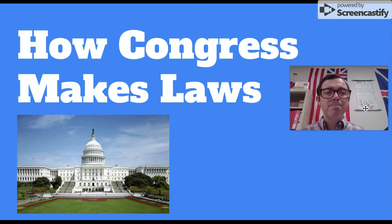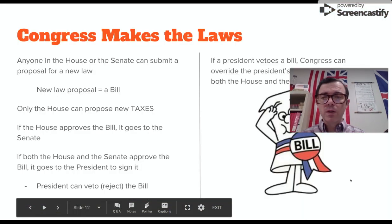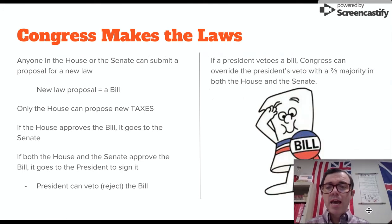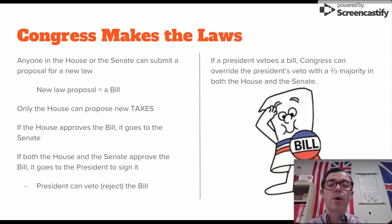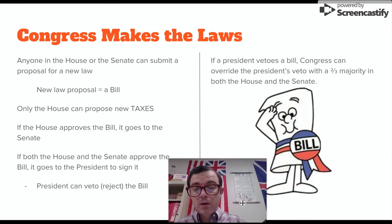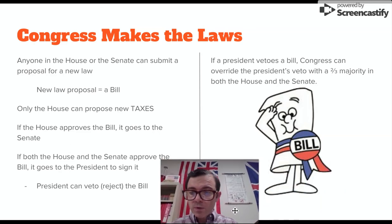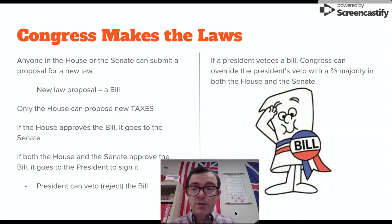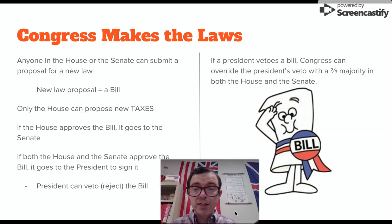How does Congress make laws? Anyone in the House or the Senate can submit a proposal for a new law. A new law proposal is called a bill. So if the House approves a bill, it goes to the Senate. If both the House and the Senate approve the bill, it goes to the President to be signed. The President can veto the bill, which means he can reject it.